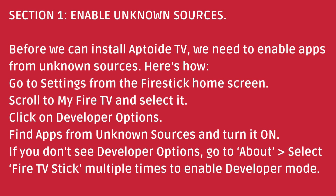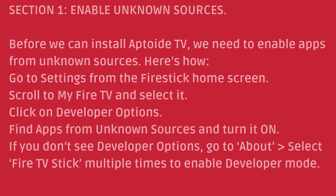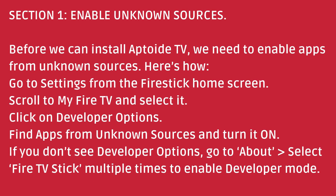Enable Unknown Sources. Before we can install Aptoide TV, we need to enable apps from unknown sources. Here's how: go to Settings from the Fire Stick home screen, scroll to My Fire TV and select it, then click on Developer Options. Find Apps from Unknown Sources and turn it on.